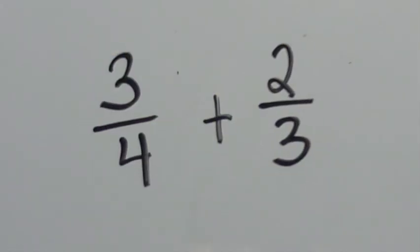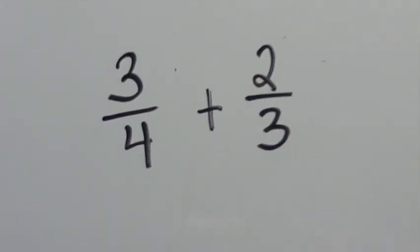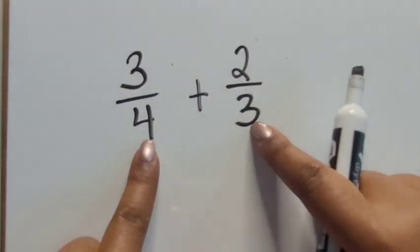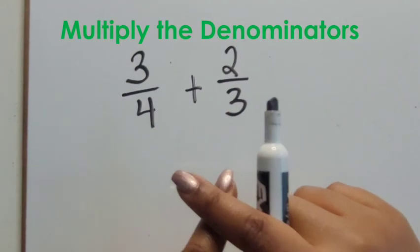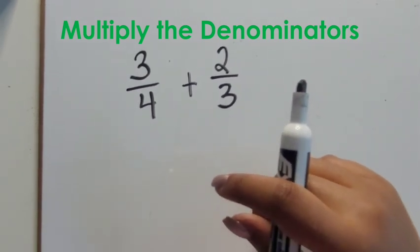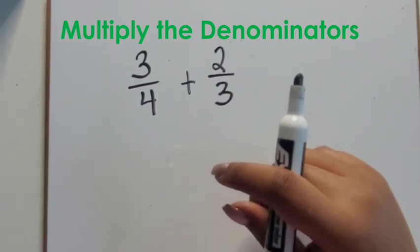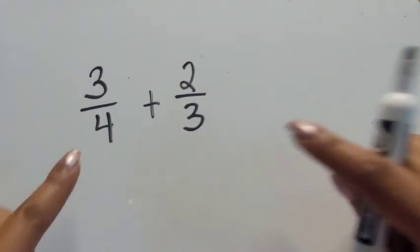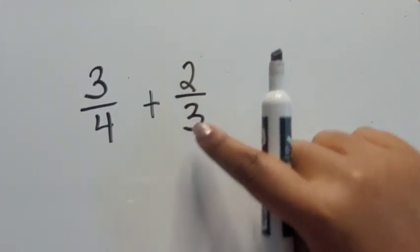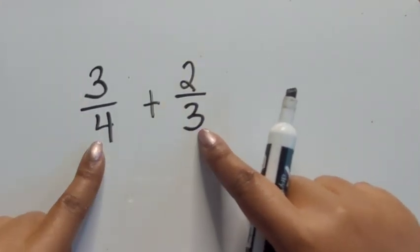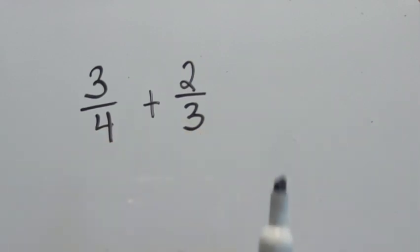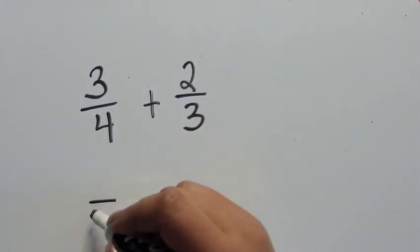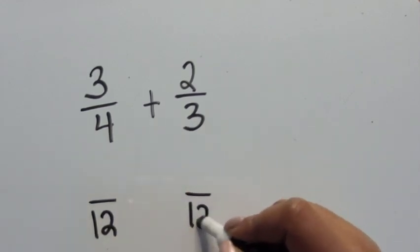Another option for adding fractions with unlike denominators is to take the two denominators and multiply them together — you'll find a common denominator a little more quickly and efficiently. So for three-fourths and two-thirds, our denominators are four and three. Four times three is 12, so our new denominator will be 12.